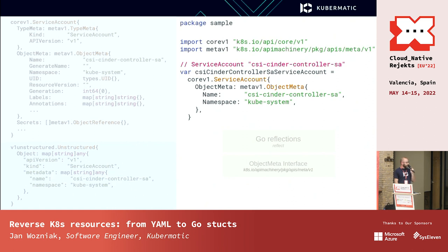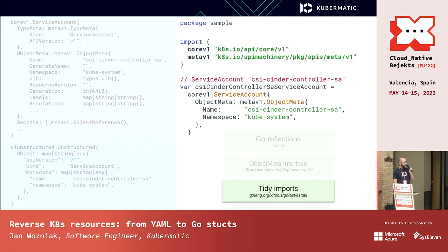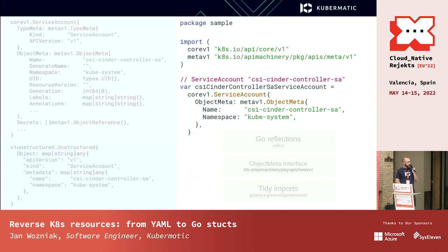That is where we can safely terminate. Despite the fact the first runtime object has a lot of extra information, the unstructured object helped us figure out what is necessary. There is a little bit of post-processing involved — the astutils package has a very convenient way to organize your imports. And voilà, you have just translated your YAML into a Go file. Thank you very much.